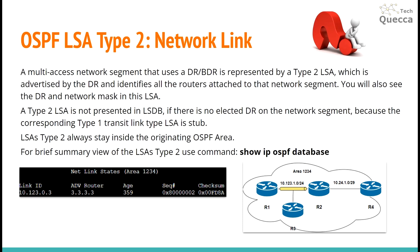LSA Type 2 always stays inside the originating OSPF area. For a brief summary view of LSA Type 2, use the command SHOW IP OSPF DATABASE. For our reference topology, when we use this command, we can see the output which shows our net link states for area 1234.